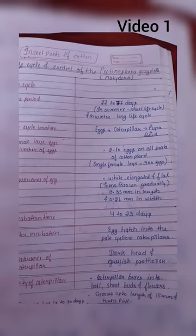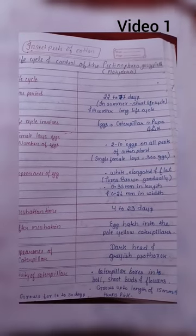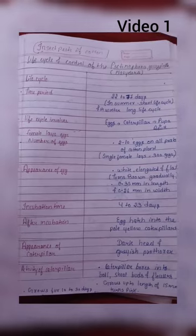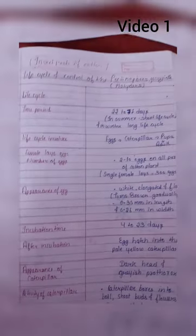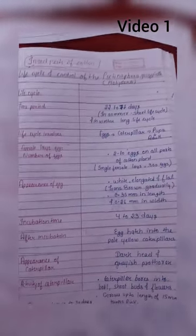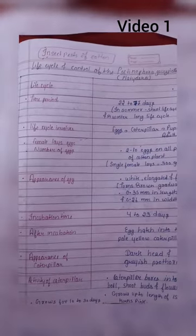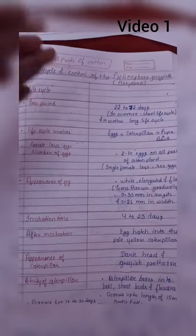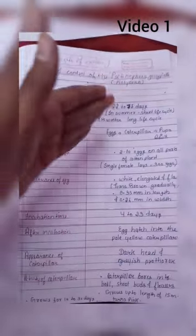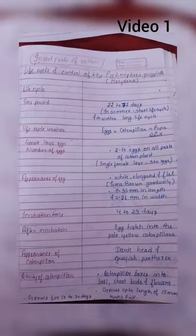It grows for 10 to 30 days and turns into pink color, so the pink color will change. The caterpillar will start to bore for its nutrition. The time period is 22 to 27 days for the caterpillar stage.